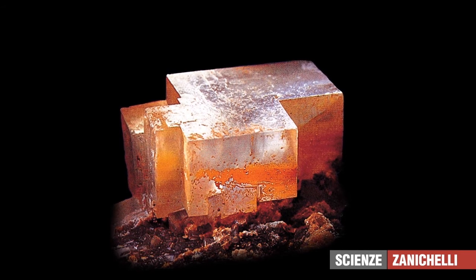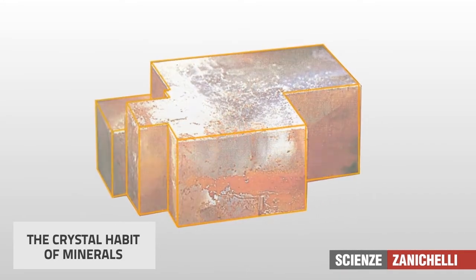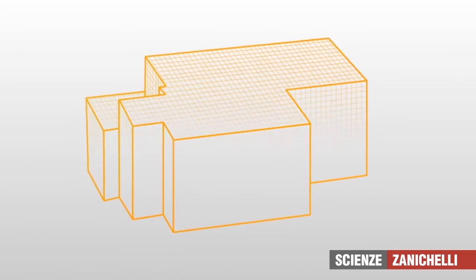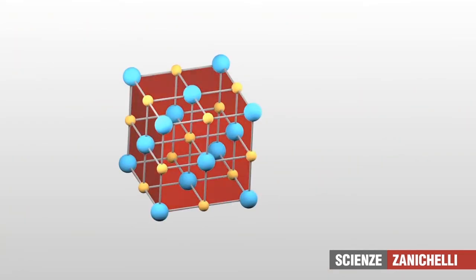But what does a mineral's habit depend on? Halite's cubic habit is no more than the result of the regular ordered repetition of the two ions it is composed of: chloride and sodium.